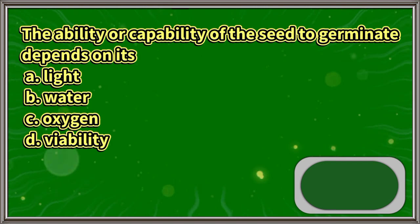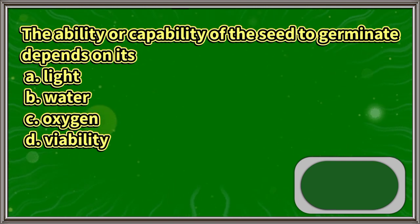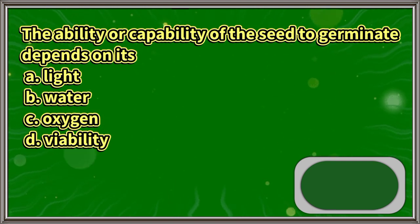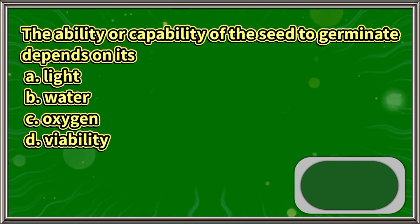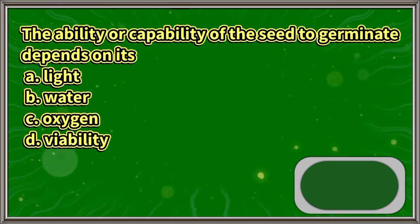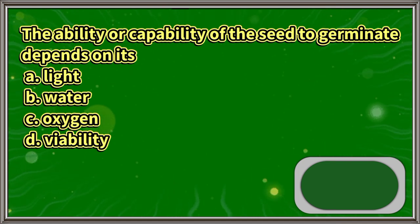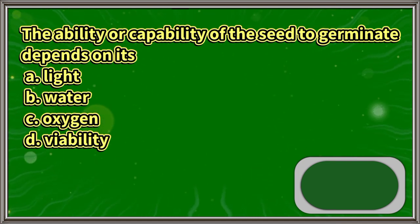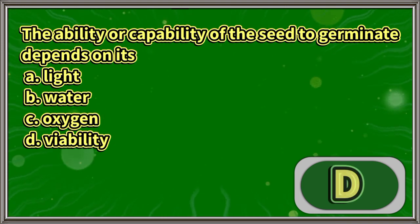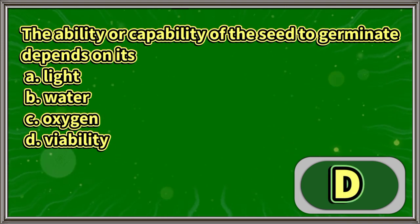The ability or capability of the seed to germinate depends on its: A. Light. B. Water. C. Oxygen. D. Viability. The answer is letter D.